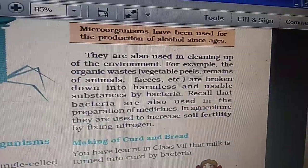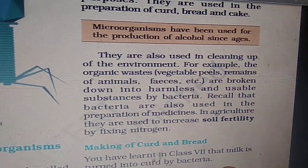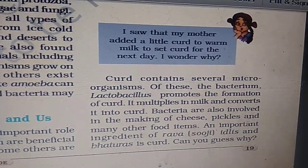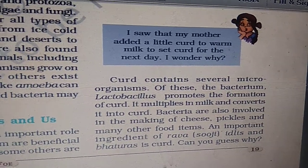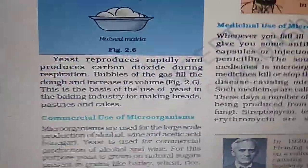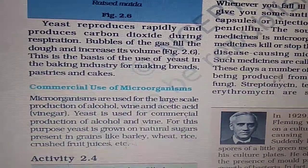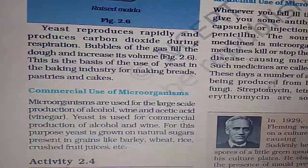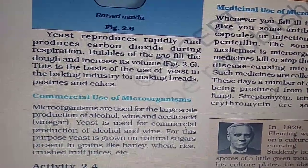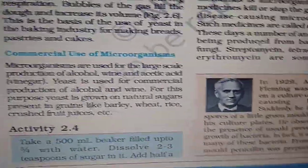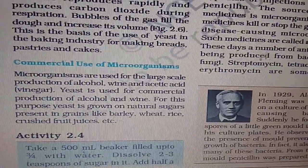Some microorganisms are very useful. They help in soil fertility by fixing nitrogen — examples are Rhizobium and cyanobacteria. They are used in making curd and bread. Curd contains bacteria like Lactobacillus, which promotes curd formation. Yeast helps in the baking industry because it produces carbon dioxide, causing breads and pastries to swell up with pores. Commercially, yeast is also used for production of alcohol and wine.